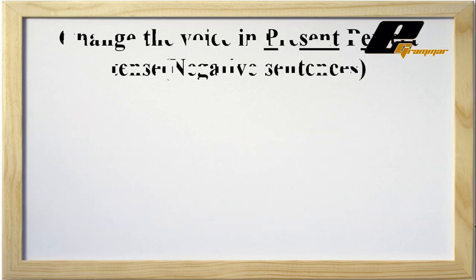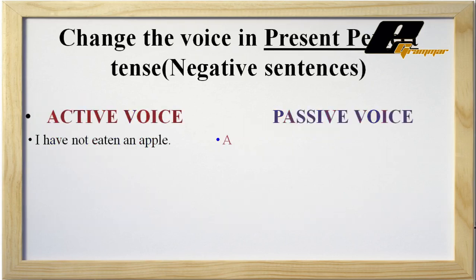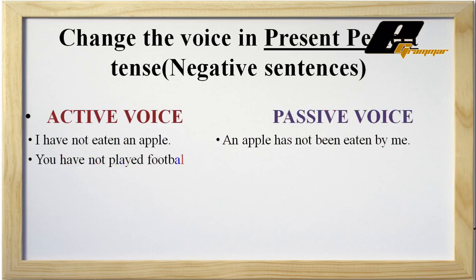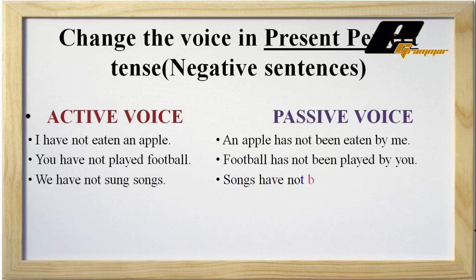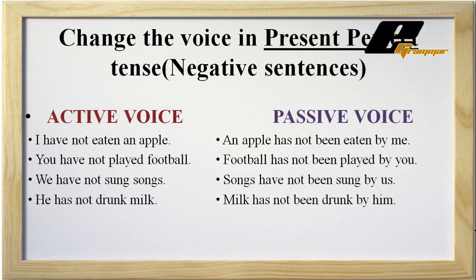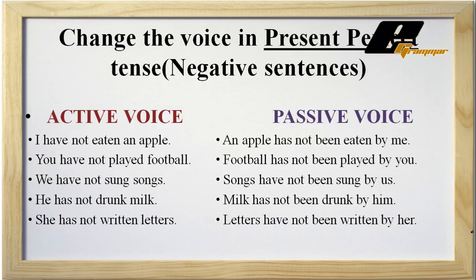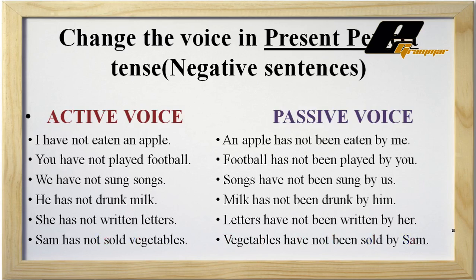Here are some examples for negative sentences. 'I have not eaten an apple' becomes 'An apple has not been eaten by me.' 'You have not played football' becomes 'Football has not been played by you.' 'We have not sung songs' becomes 'Songs have not been sung by us.' 'He has not drunk milk' becomes 'Milk has not been drunk by him.' 'She has not written letters' becomes 'Letters have not been written by her.' 'Sam has not sold vegetables' becomes 'Vegetables have not been sold by Sam.'